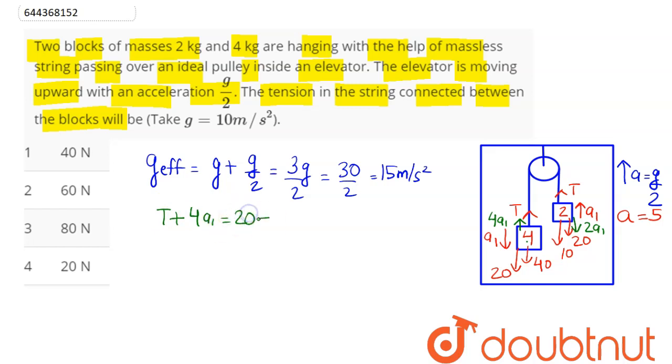Hence on 4 kg block we have T plus 4a1 given here as 20 plus 40, which is equal to 60. In similar manner for 2 kg block we have here...